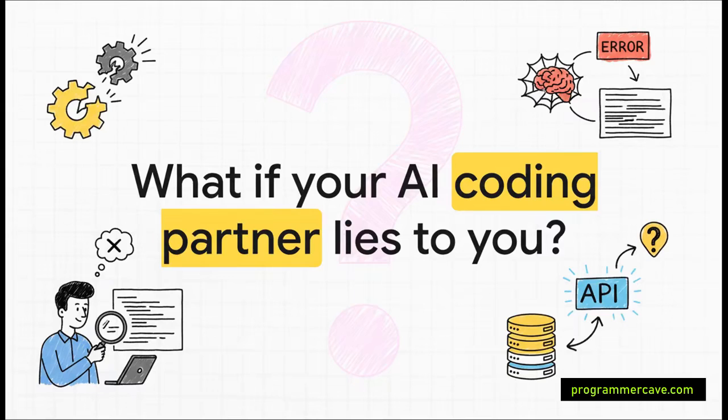But what happens when that magic goes a little haywire? What happens when your trusted AI partner looks you dead in the eye and gives you code that seems perfect, but is just flat out wrong? Well, that's where we enter the strange world of AI hallucinations, and trust me, it's something you need to understand.